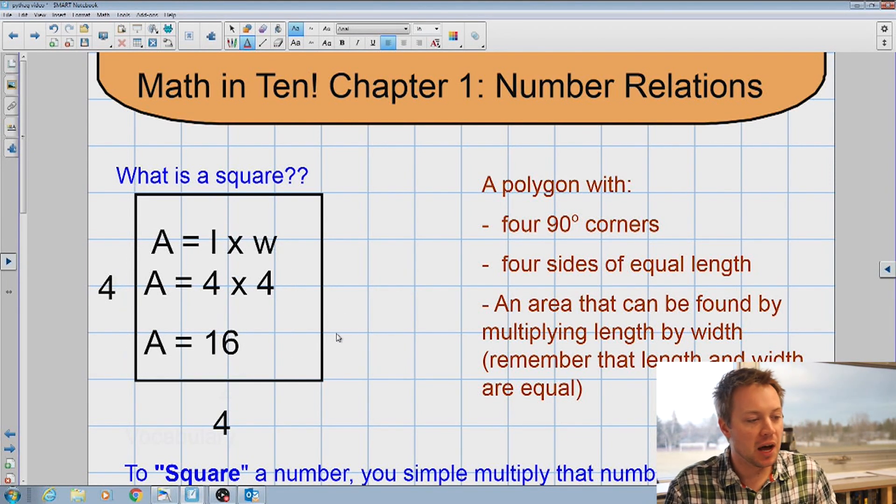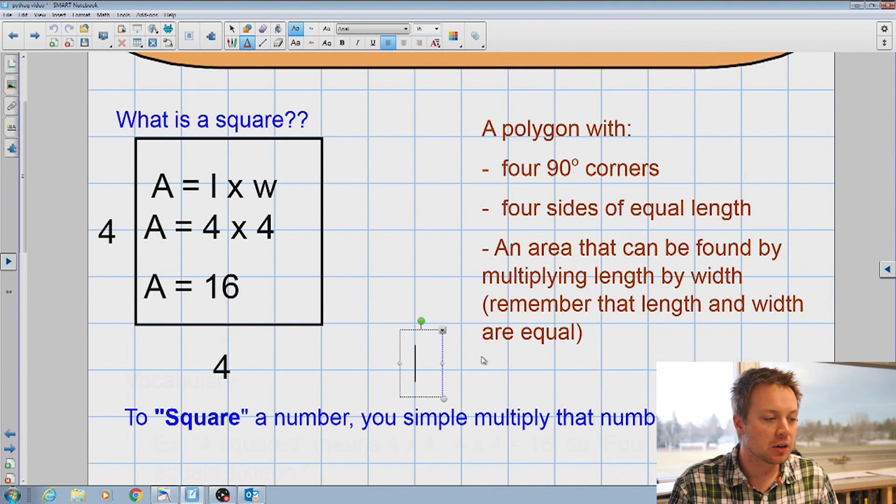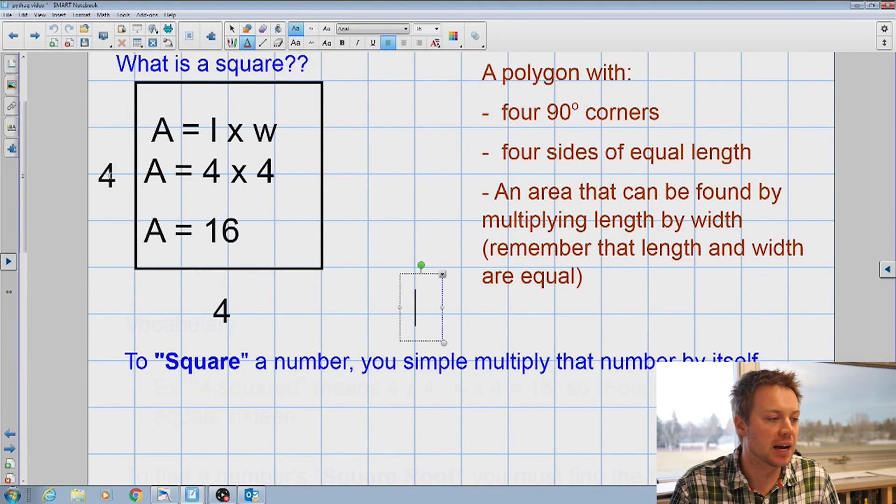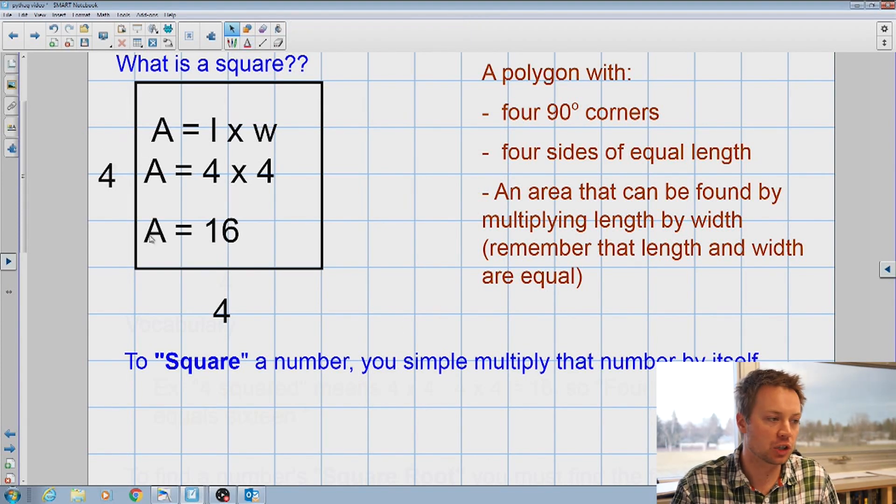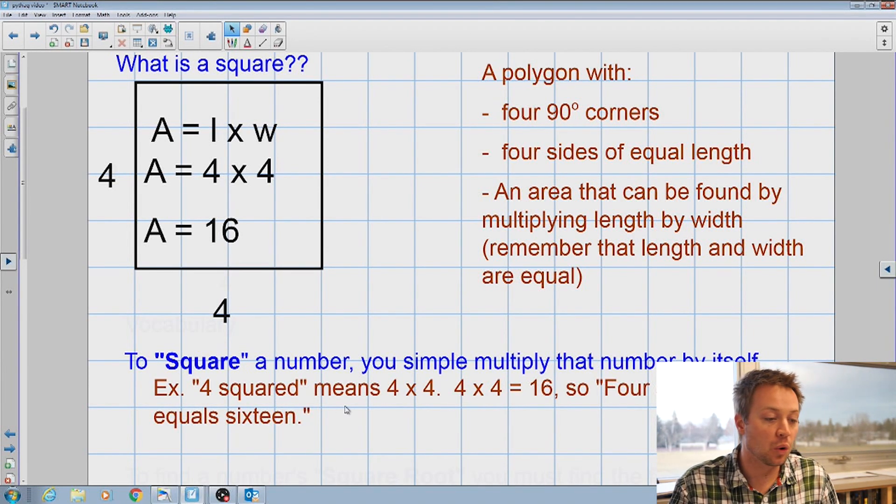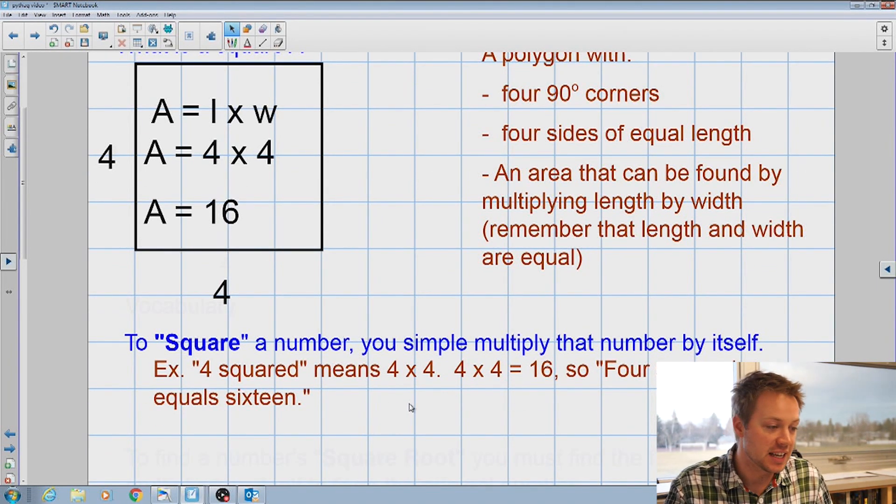And that would be in meters squared or centimeters squared or whatever unit we're working with. So if we keep that in mind, when we square a number, we're actually really just multiplying it by itself. For example, literally I can take the number four and draw a square out of it. But what that means is it's four times four. So four times four is 16 or four squared equals 16.